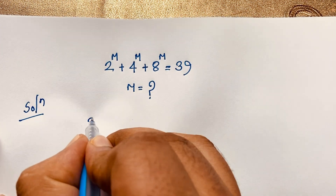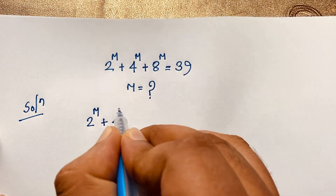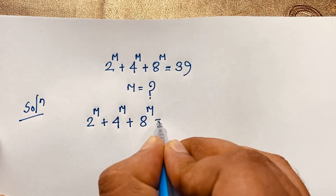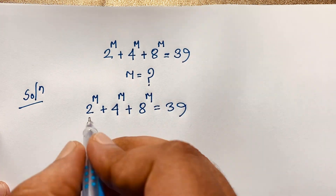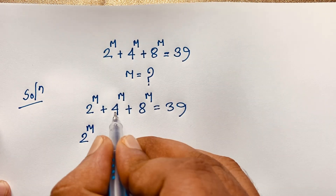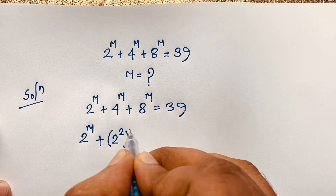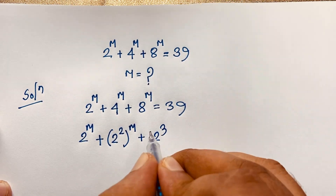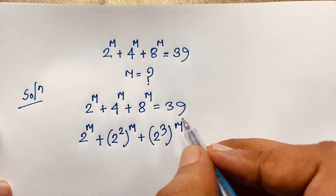Here is our question: 2 to the power m, plus 4 to the power m, plus 8 to the power m, is equal to 39. Now you can see that 4 can be written as 2 to the power 2, so 4 to the power m becomes (2²)^m. And 8 can be written as 2 to the power 3, so 8 to the power m becomes (2³)^m. This equals 39.